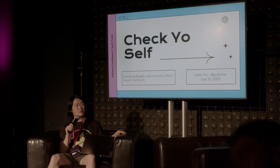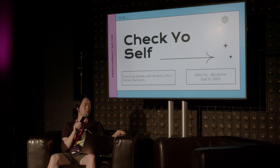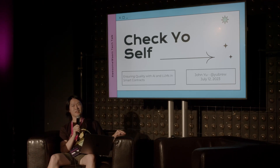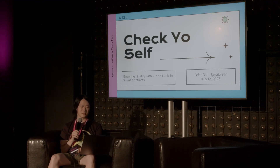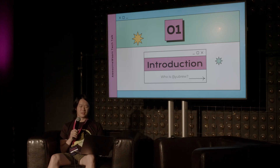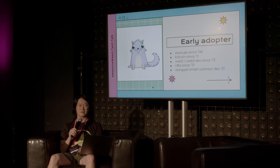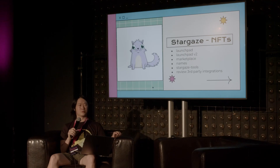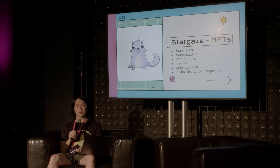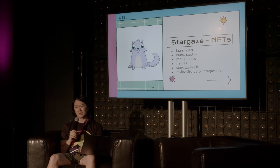Hi, my name is John Liu and I'm presenting 'Check Yourself Before You Practice: Ensuring Quality with AI and LLMs in the context of smart profiles.' I work at Stargaze working on their smart contracts, and I contribute a lot to the smart contracts currently in production — Launchpad, Randomized Minting, Marketplace, Names, and so forth.